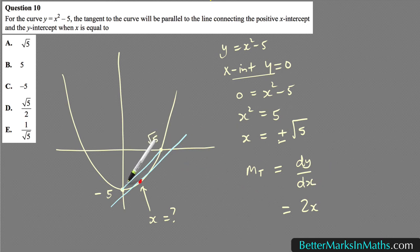The gradient of that line connecting those two intercepts, that's a right-angle triangle. Rise over run is what you want. The rise is 5, and so 5 over, and the run is root 5. You've got an equation with an x in it and the rest of the numbers.